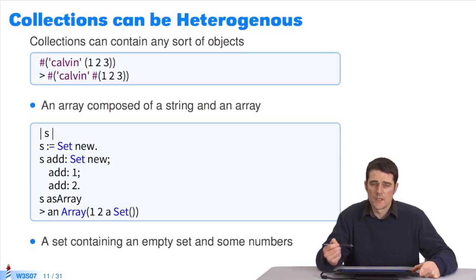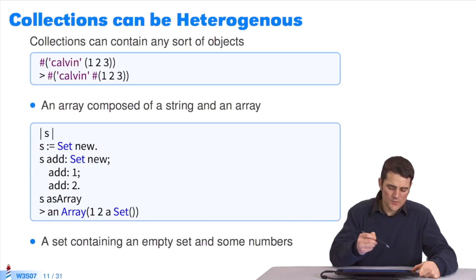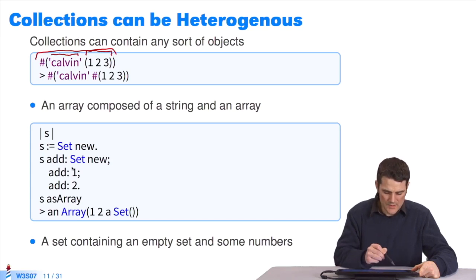Collections can contain any types of objects. I'll show you one example. This literal collection contains the string Calvin, and a collection containing the numbers 1, 2, 3. I can create an array. This array is composed of the elements 1, 2, and of Set at the end. I added the element 1 here, then the element 2, then set.